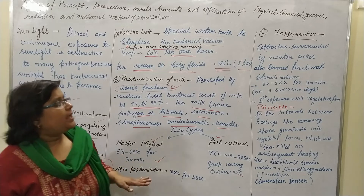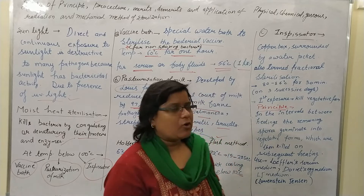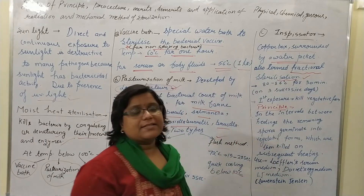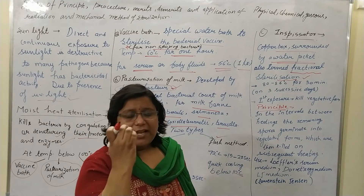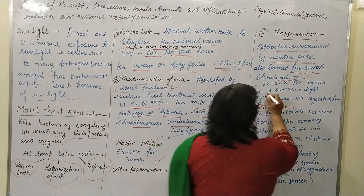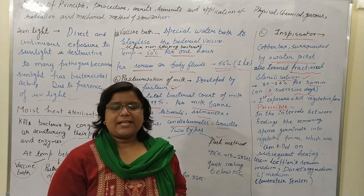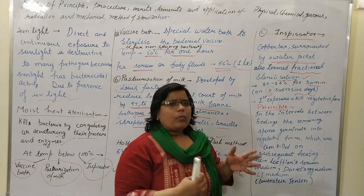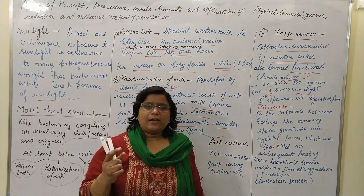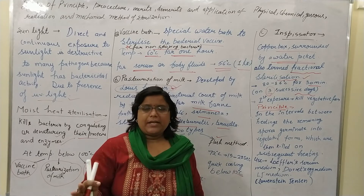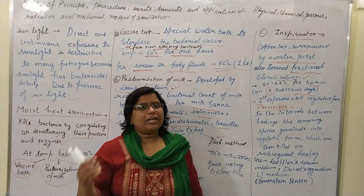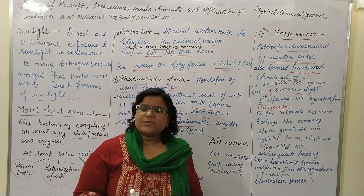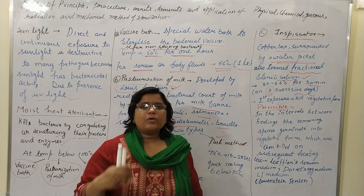The third method below 100 degrees Celsius is the inspissator. The inspissator is a copper box which has a water jacket. It is also termed as fractional sterilization. The temperature is maintained at 80 to 85 degrees Celsius for 30 minutes for three successive days. On the first day, as we increase and maintain the temperature to 80-85 degrees Celsius for 30 minutes, all vegetative forms get killed, but spore forms germinate because of this excessive temperature exposure.